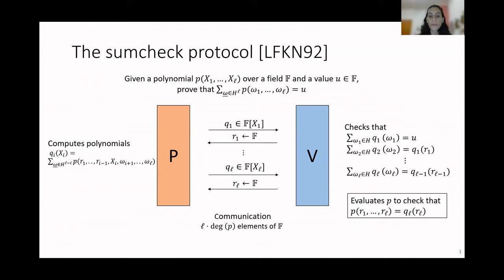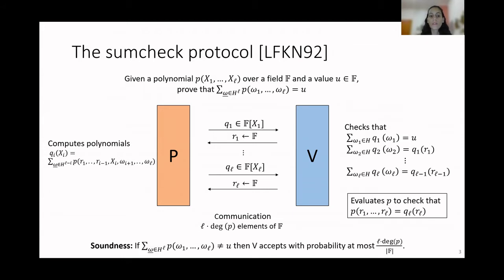The communication of the protocol is proportional to L — the number of variables in the polynomial P — and the degree of P, counted in elements of the finite field F. The soundness of this protocol says that if the sum of the evaluations of the polynomial P is not equal to the value U, then the verifier accepts with probability proportional to L times the degree of P over the size of F.